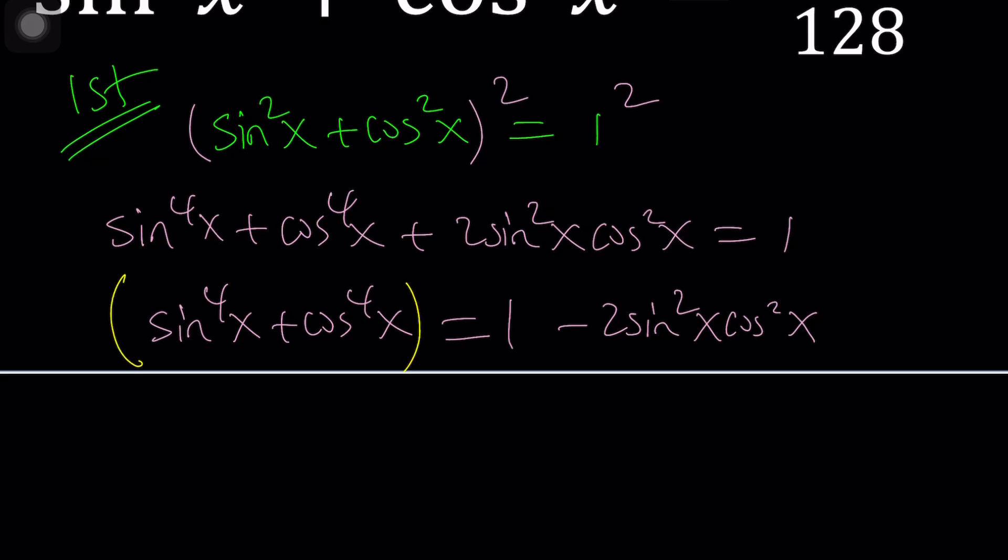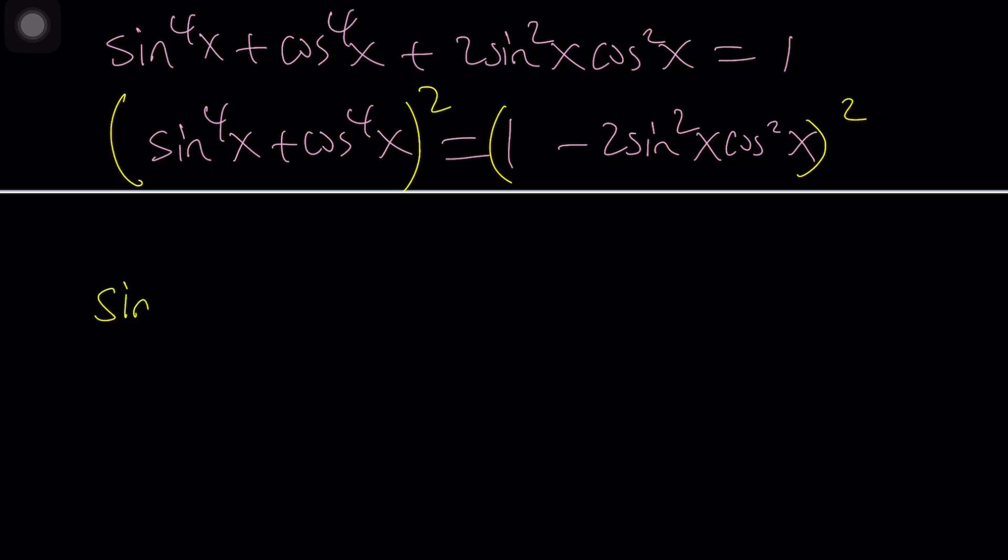Let's go ahead and square both sides and that should give us sine x to the eighth plus cosine x to the eighth plus two sine x to the fourth cosine x to the fourth. And on the right hand side we have a difference squared, so that'll be one squared minus